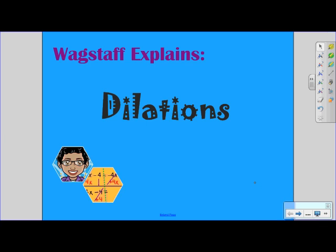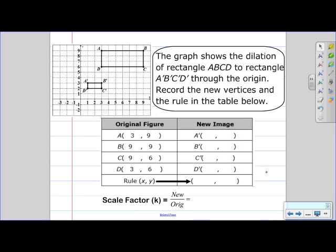Let's take a look at our first problem. The graph shows the dilation of rectangle ABCD to rectangle A'B'C'D' through the origin. So we have our original, let's just label that O, and then our new rectangle, let's just label that N.